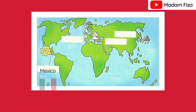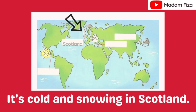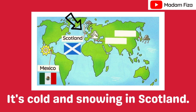Okay, next sentence. It's cold and snowing in Scotland. Can you spot the symbol of cold and snowing on the map? Great job! That is Scotland. It's cold and snowing in Scotland.